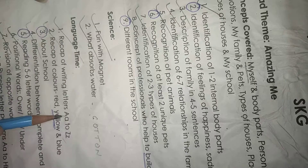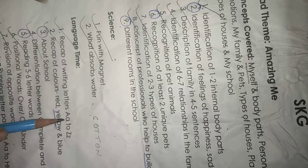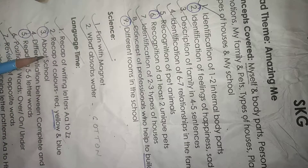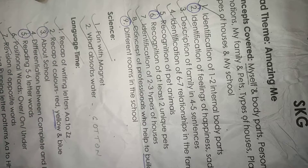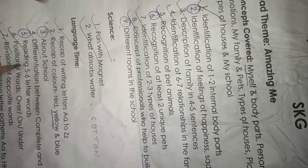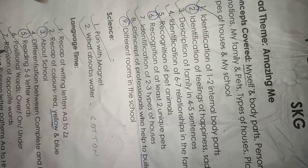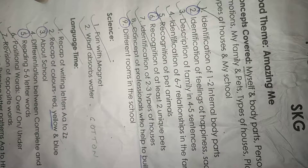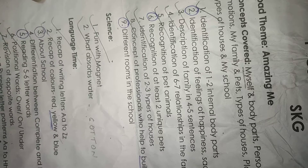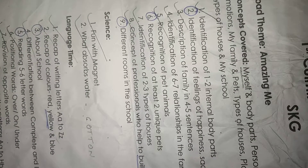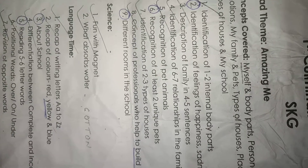Language time includes: recap of writing letters A to Z, recap of colors red, yellow and blue, about school, reading five to six letter words, revision of opposite words, and tracing and learning letter patterns — capital A and small a, up to capital H and small h.